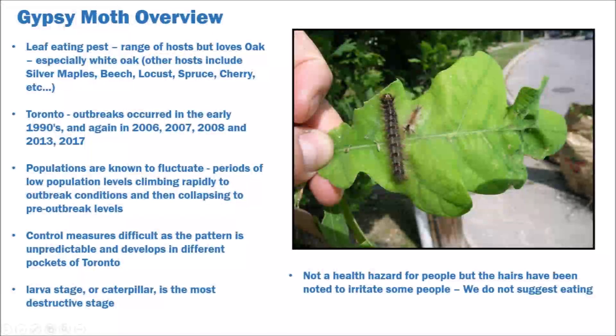Toronto has had several outbreaks in pockets of the city starting in the 1990s, 2006 to 2008, 2013 and again in 2017. Gypsy Moth populations within these pockets fluctuate from low to high and are not consistent across the city, making overall control difficult. The larval stage or caterpillar is the most damaging since this is when feeding occurs and can last up to seven weeks. Gypsy Moth at any stage in its life cycle is not a human or animal hazard. They can be unsightly and a nuisance but are not a health threat.